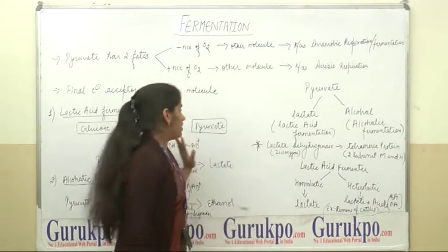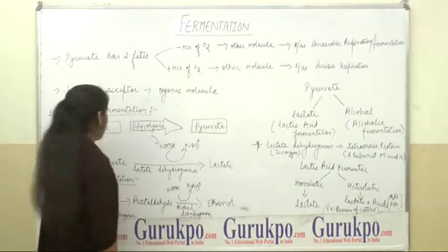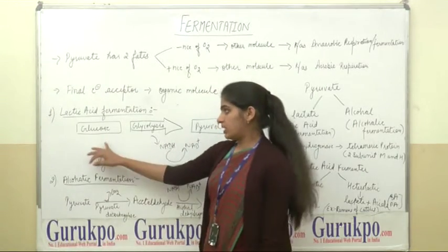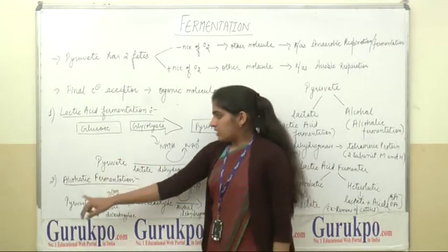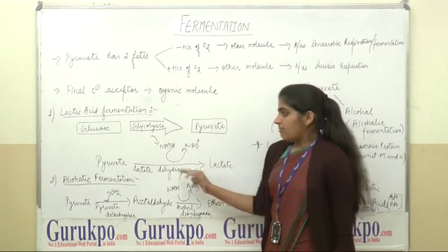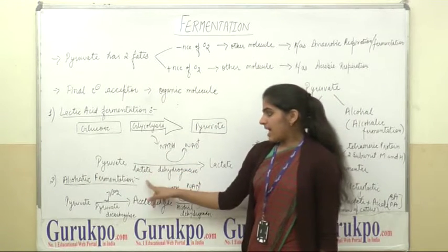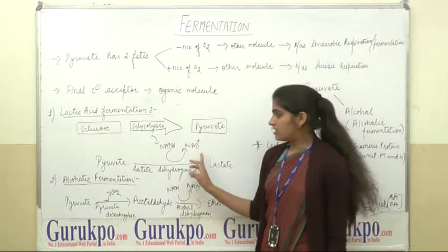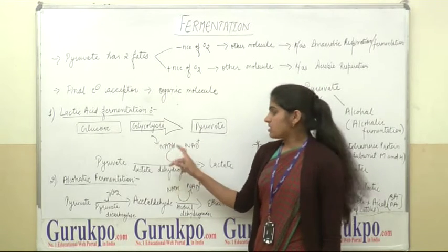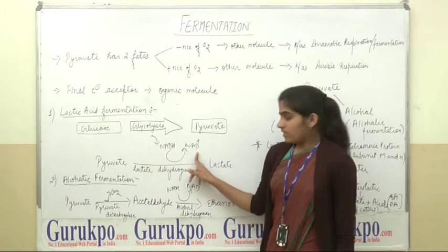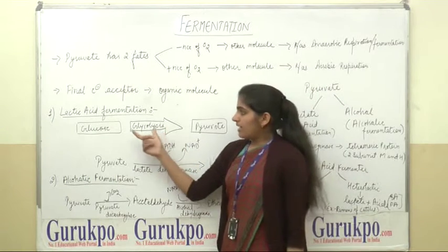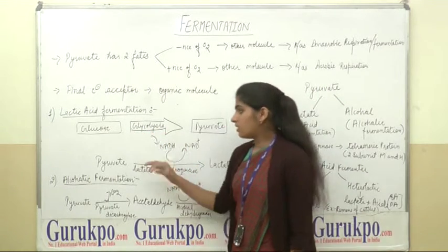Now, first we will discuss about lactic acid fermentation. In lactic acid fermentation, the pyruvate is converted into lactate by the enzyme lactate dehydrogenase. In this process, NADH is converted into NAD+, and this NADH is provided by the glycolysis process.